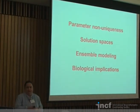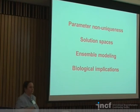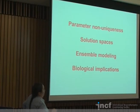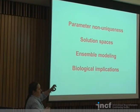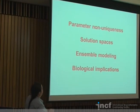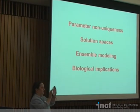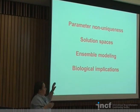This wraps up the core message: there is parameter non-uniqueness both in biology and in models. Parameter non-uniqueness means there is not just one point in parameter space that the system must sit in to function properly — you seem to be able to do the job with a wide range of different parameters. This leads to the concept of a solution space: the sub-part of the entire parameter space where these functional parameter combinations reside.